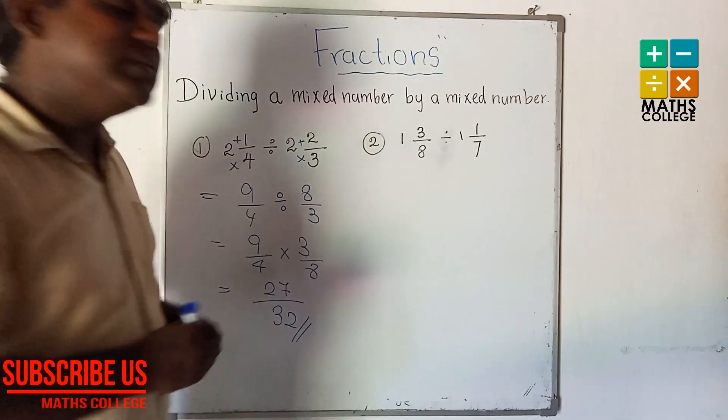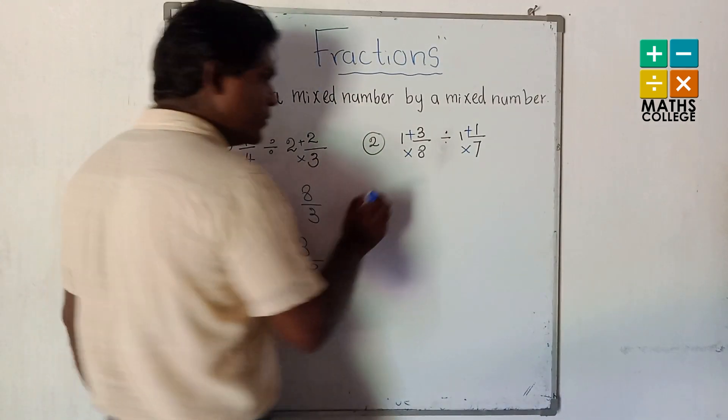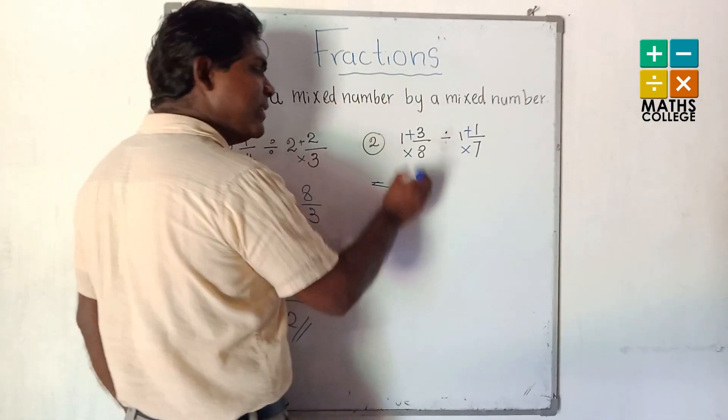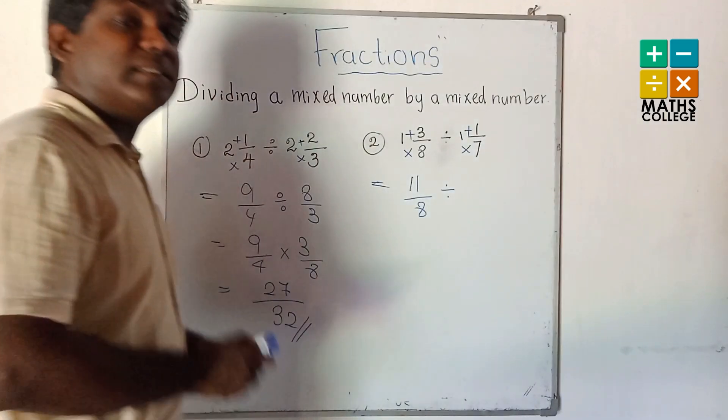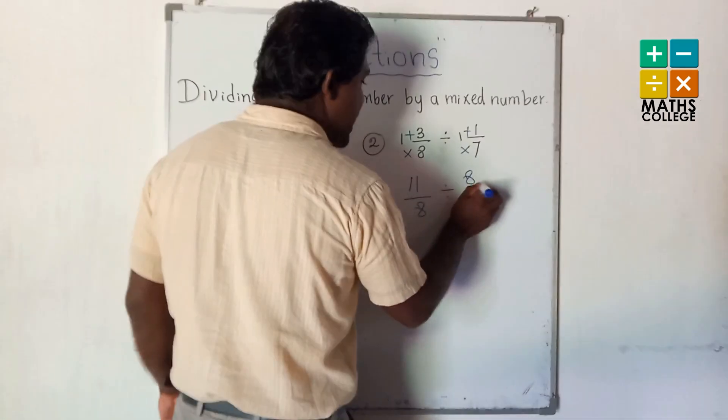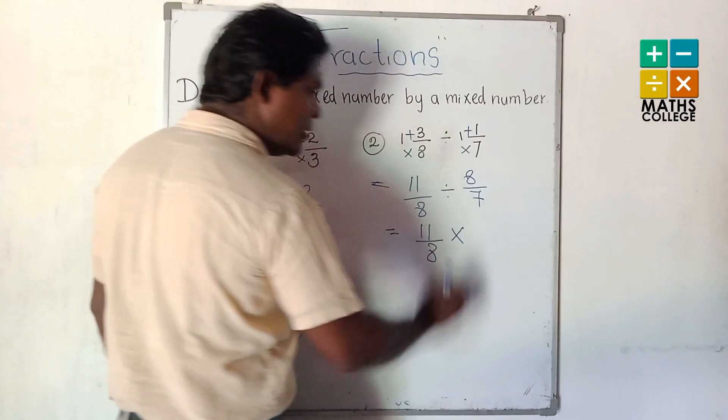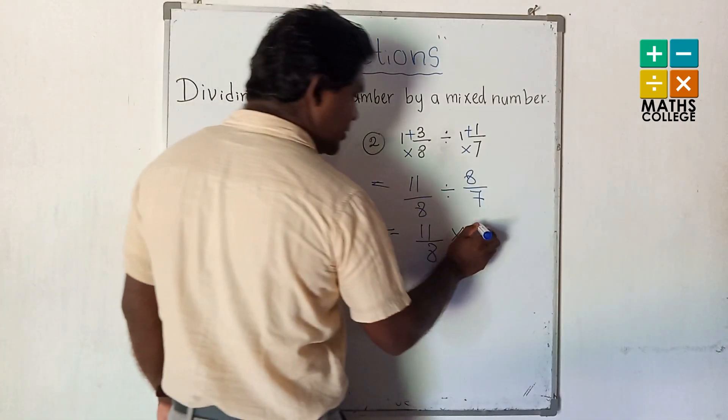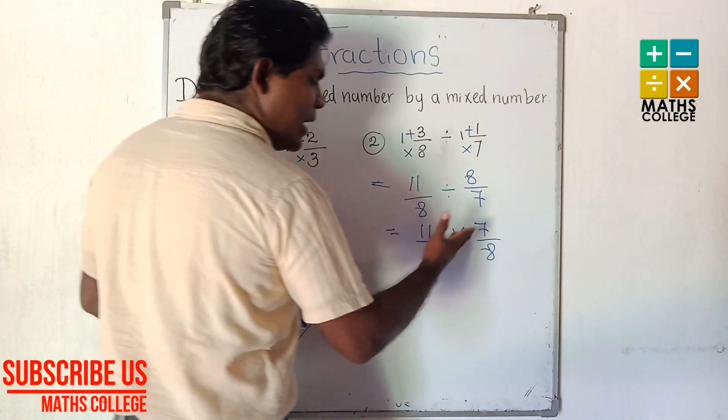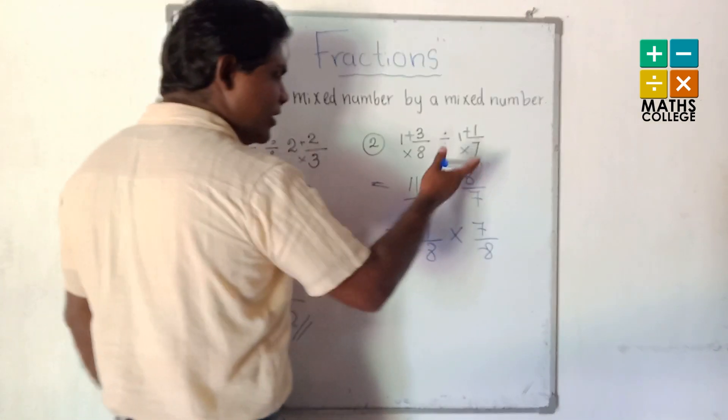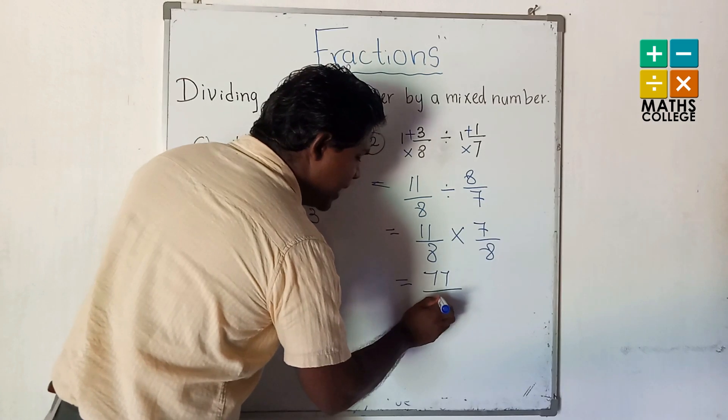Next one, second example. Multiply and add: 8 multiply 1 is 8, 8 addition 3 is 11 upon 8, divided by 7 multiply 1 is 7, 7 addition 1 is 8 upon 7. Now this division changes to multiplication with reciprocal. What is the reciprocal? 7 upon 8. Now you can multiply because no common factor: 11 multiply 7 is 77, 8 multiply 8 is 64.